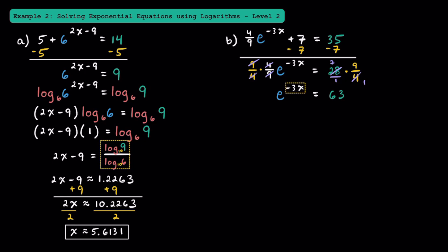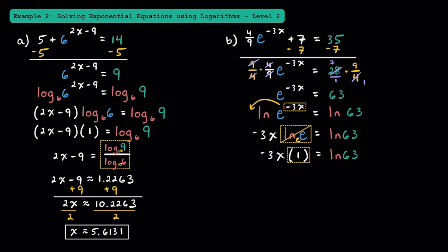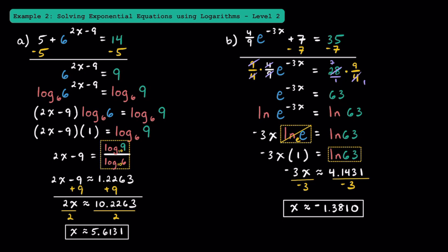Now to solve for x, we need to get this negative 3x down from the exponent. To do that, we're going to take the natural logarithm, or ln, of both sides, because ln is base e. Now that we have a logarithm, we can move this negative 3x down in front, and we have negative 3x times ln of e is equal to ln of 63. Since ln of e is just equal to 1, we can write negative 3x is equal to ln of 63, which is approximately 4.1431. Dividing both sides by negative 3, x is approximately negative 1.3810.